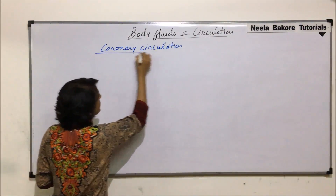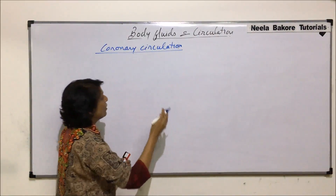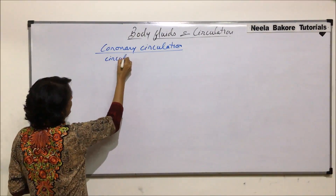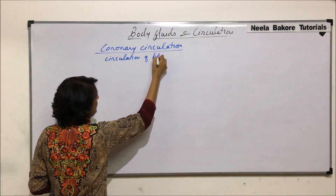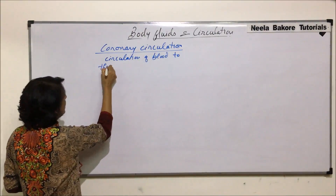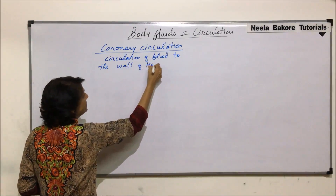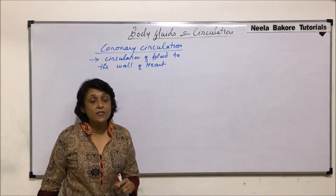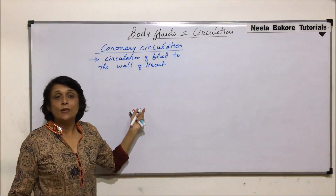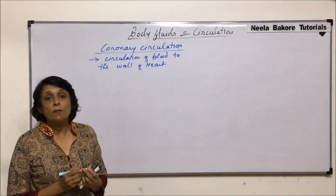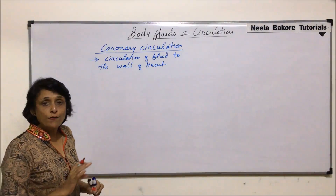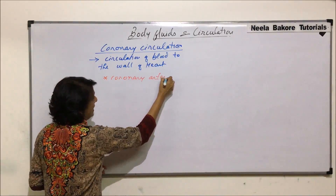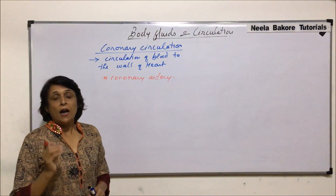Coronary circulation basically means circulation of blood to the wall of the heart. The heart wall is made up of cardiac muscles and it requires continuous blood supply so that it can work properly. The blood which is supplied to the wall of the heart is by the coronary artery.